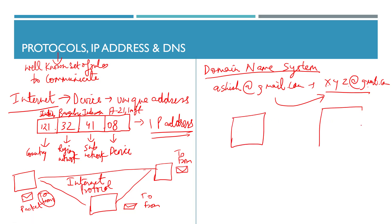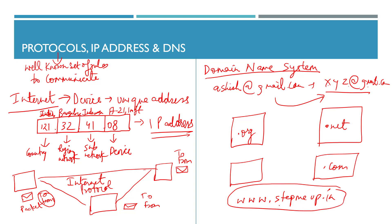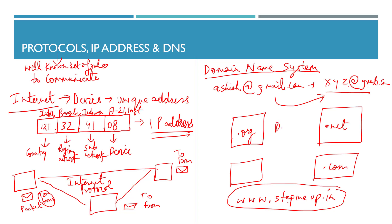There are multiple domain servers because there are billions of devices, and they share responsibility through a hierarchy. You may have seen extensions like .org, .net, or .com. When you type something like www.stepmeup.in in your browser, the DNS servers identify the exact IP address and direct the request to the right destination.